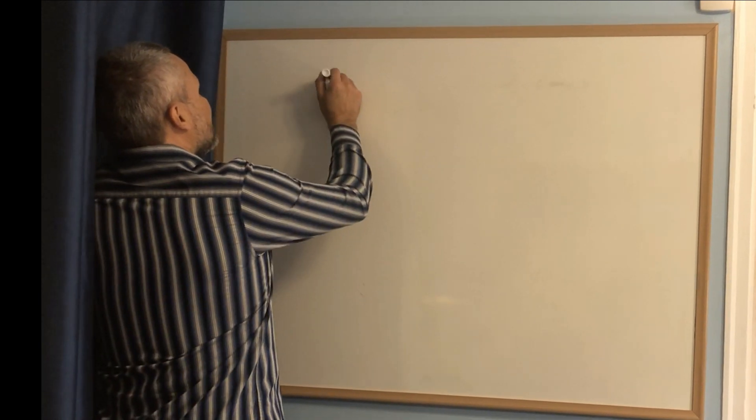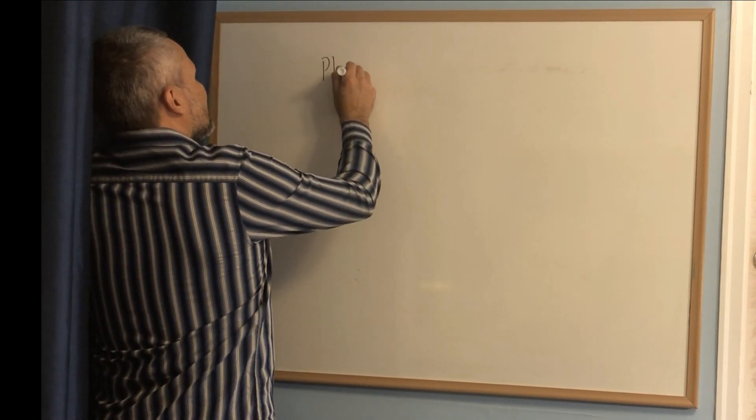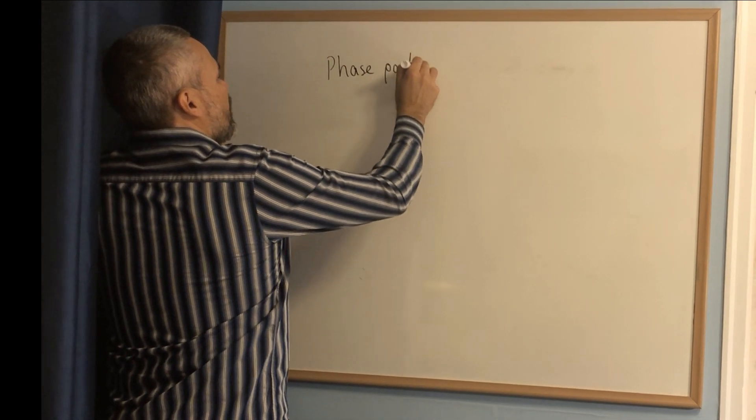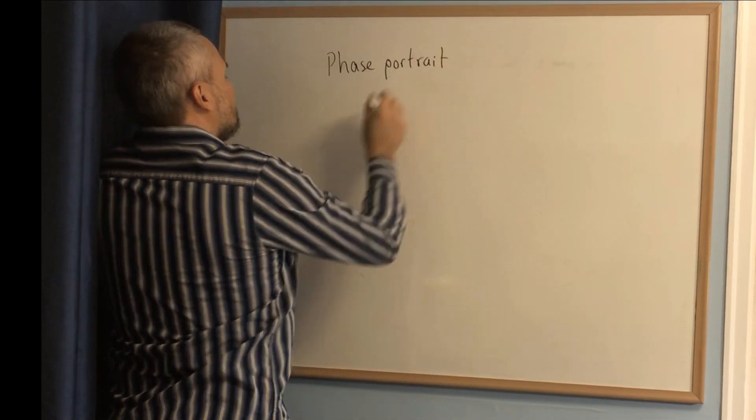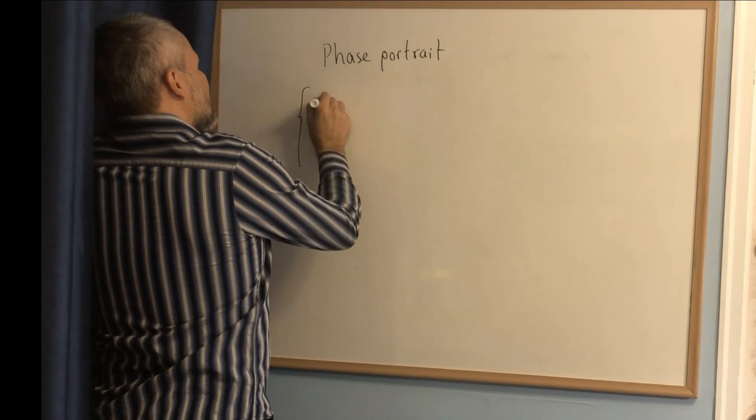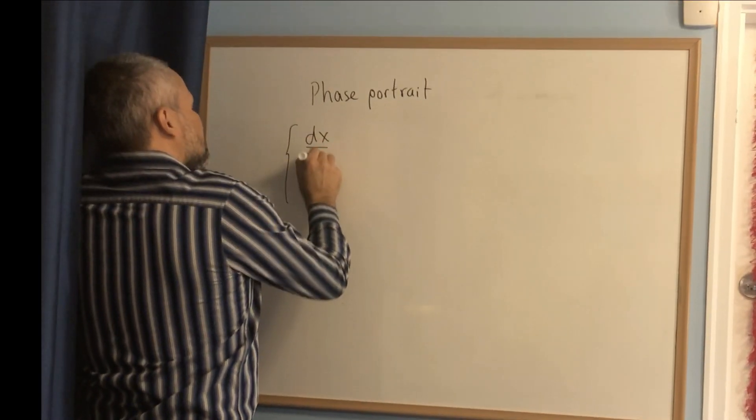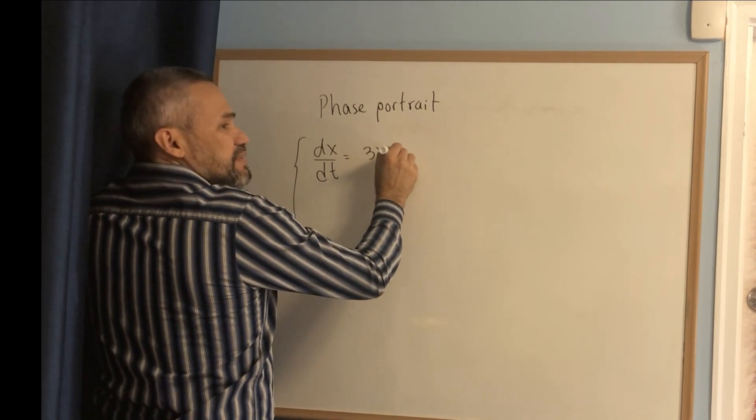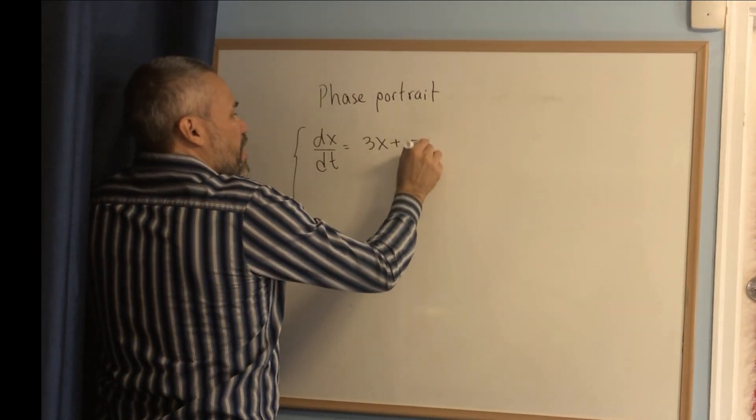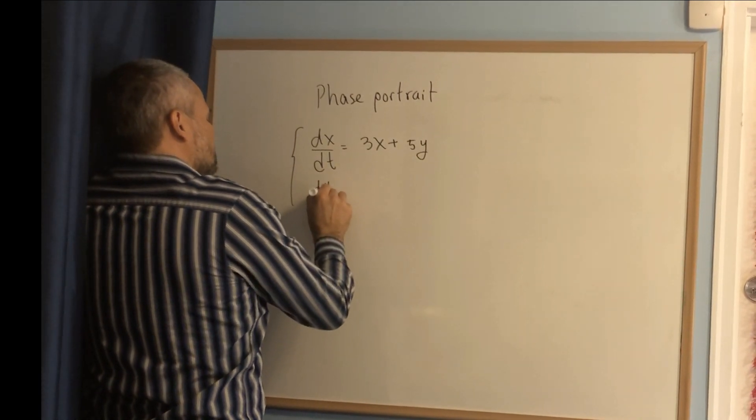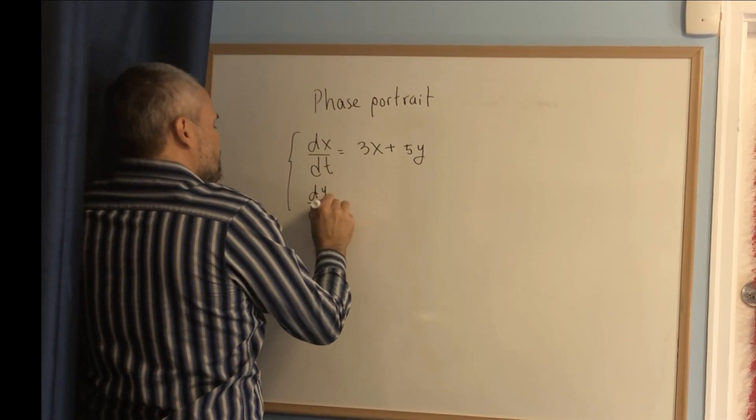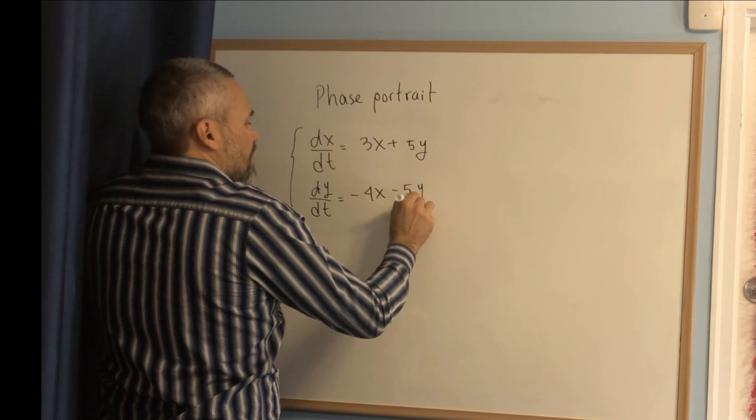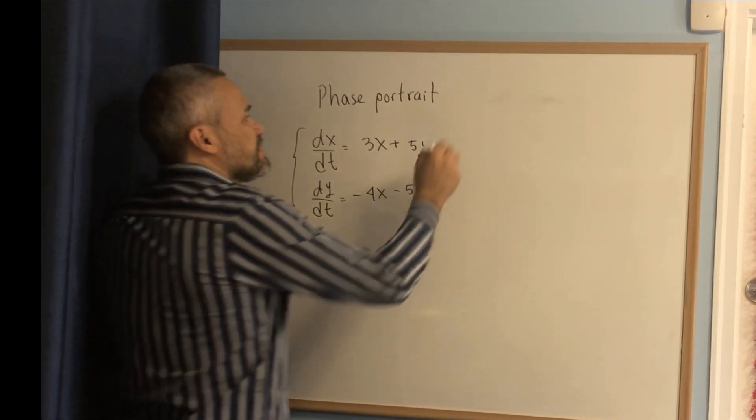Okay, let's do another example of a phase portrait. This time we're going to consider dx/dt = 3x + 5y and dy/dt = -4x - 5y. In this case,